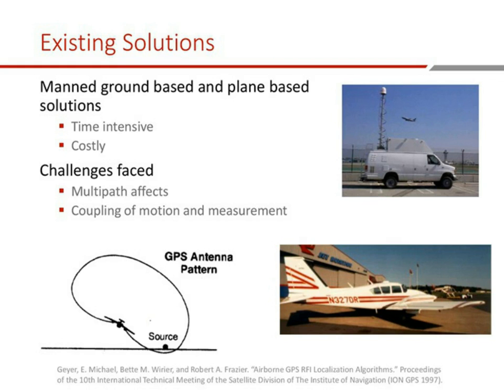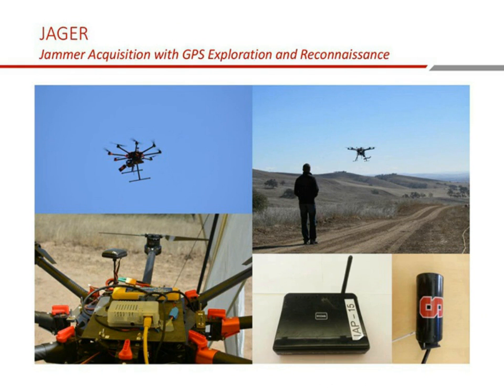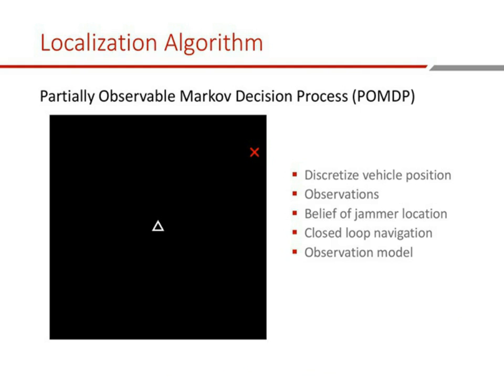Our solution is a system we're calling JAEGER — Jammer Acquisition with GPS Exploration and Reconnaissance. JAEGER is designed to be a fully autonomous UAV that will be able to rapidly localize the source of a GPS jammer. To figure out how we want to localize that jammer, we need to talk about the algorithm that will do that localization — that's going to be the key element.